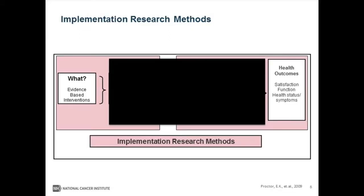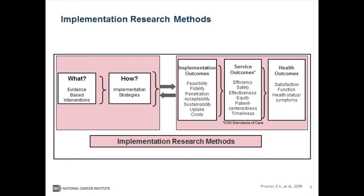As you've become more familiar with the model put forth by Proctor and colleagues, this is the basic reason that we are talking about implementation research. It's helping us understand this black box of how do we get from the what — that's the evidence-based interventions — to the health outcomes, such as satisfaction, function, and health status improvements. Proctor and colleagues make a push for thinking about the specific components that impact implementation outcomes.